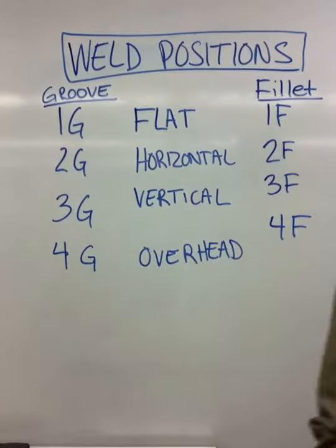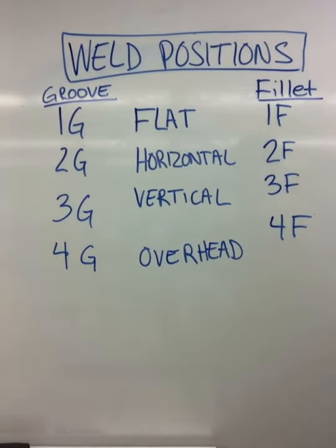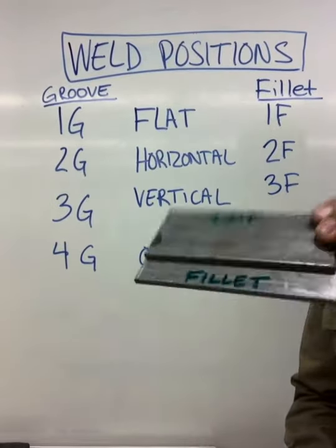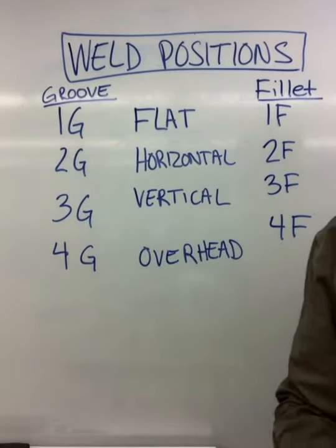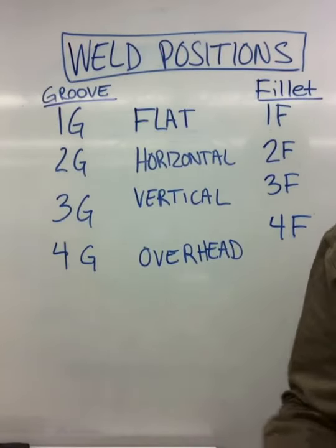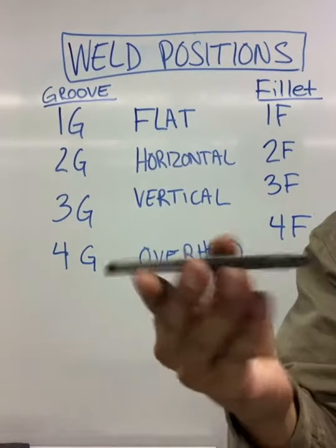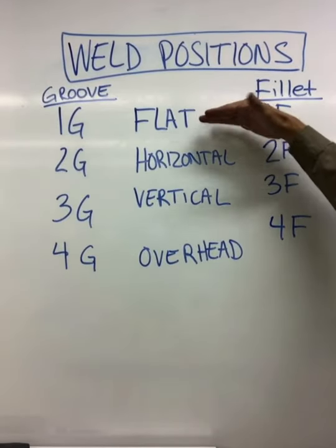T, corner, and lap. The two types of grooves are going to be butt weld and edge weld. We can go ahead and divide up all of our positions into flat, horizontal,